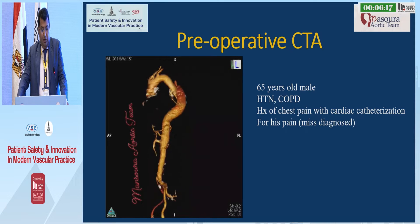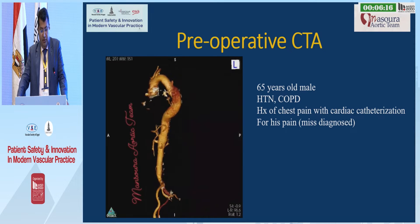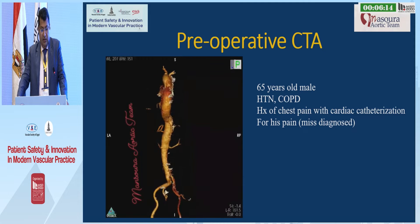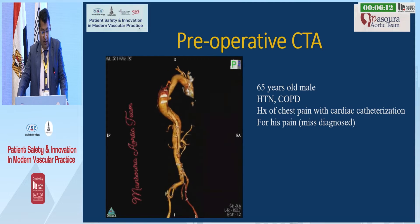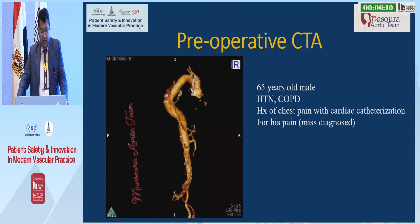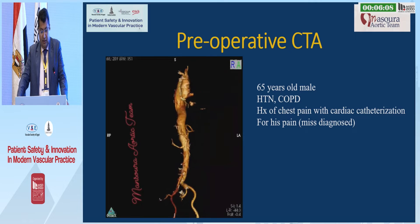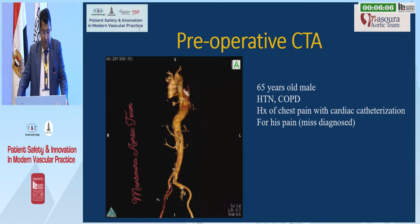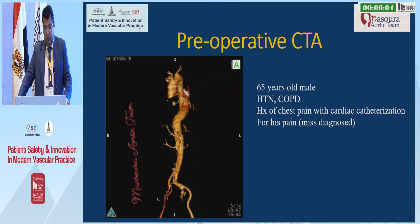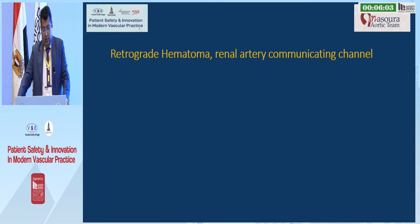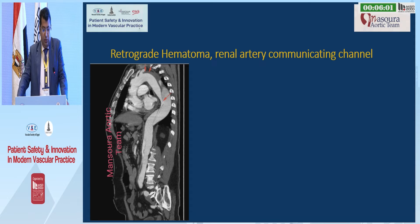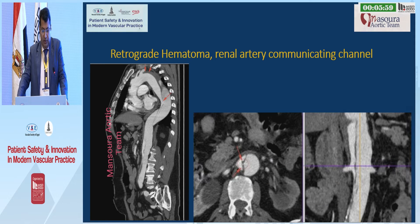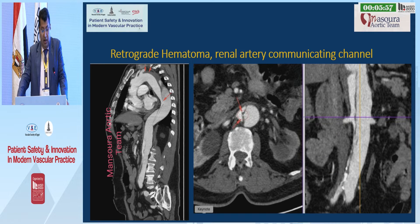This is our pre-operative study from our case. It is a 65-year-old male, hypertensive, with COPD, history of chest pain with cardiac catheterization for his pain — misdiagnosed. He has retrograde hematoma and a renal artery communicating channel at the level of the left renal artery.